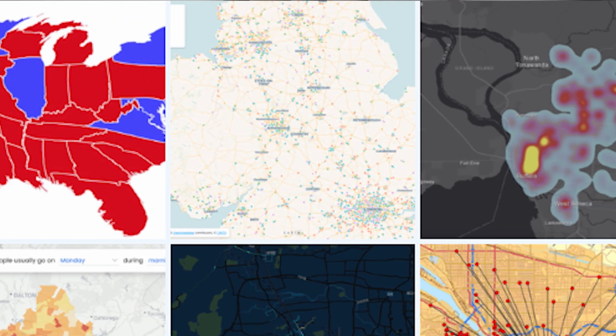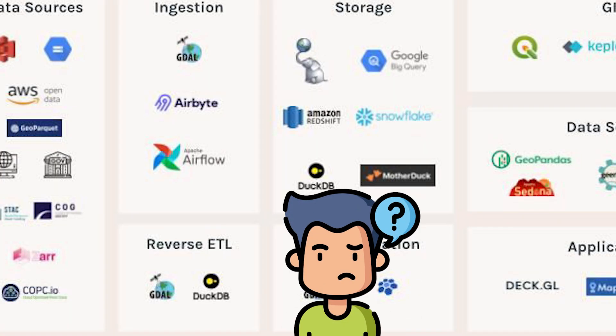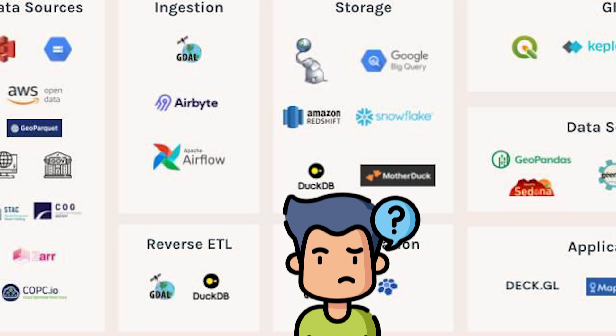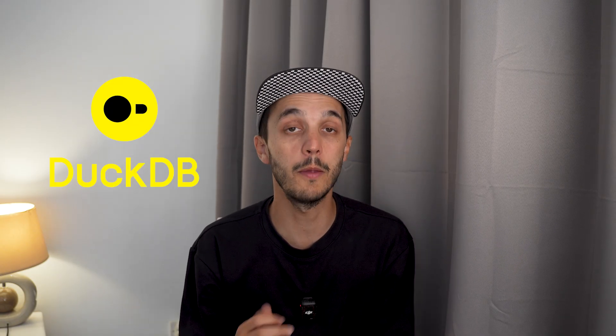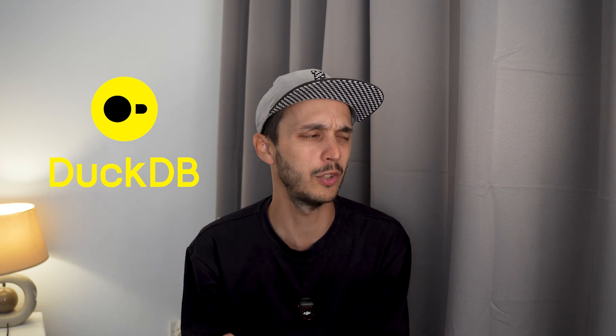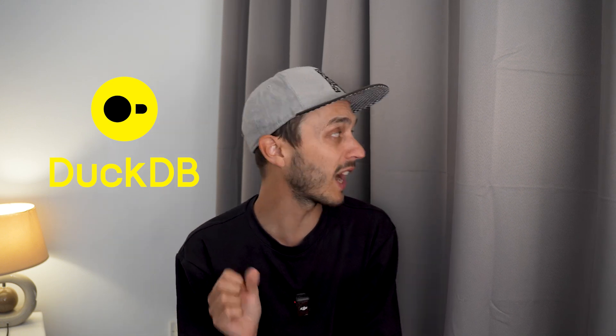Geospatial analysis has always been an important topic in data but hard to dive into. One big reason is that it's just hard to get set up. There are so many standards, tools, and dependencies in geospatial that it can be challenging to just iterate, poke around data, transform it, and plot something. That being said, we have a couple of new tools including DuckDB which helps you move much faster — or should I say, quack louder.